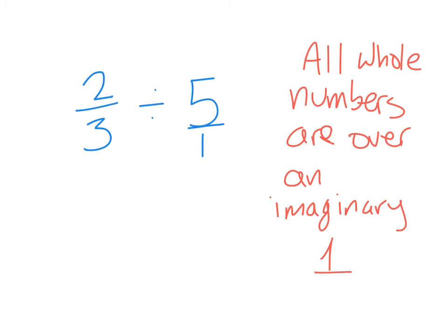Okay? So then when I'm going to rewrite this, I would say two-thirds times, and then you do the reciprocal. Instead of five over one, you would put one over five. Multiply straight across. Two times one is two. Three times five is fifteen. Cannot reduce that any further. So my answer would be two over fifteen.